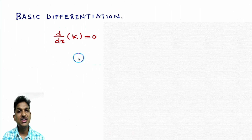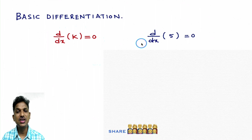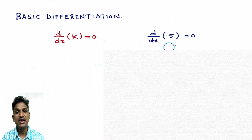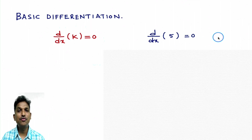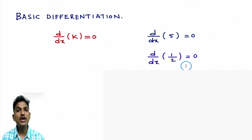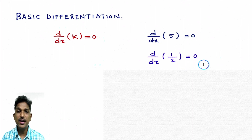How do we use this formula while doing differentiation problems? Derivative of 5 — as 5 is constant, derivative of constant is 0. Therefore, derivative of 5 is 0. Derivative of 1/2 — 1/2 is constant, so derivative of 1/2 is 0. Derivative of root 3 — root 3 is constant, so derivative of root 3 is 0. Derivative of minus 100 — minus 100 is a constant, so derivative of minus 100 is 0.